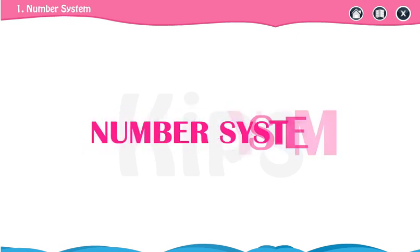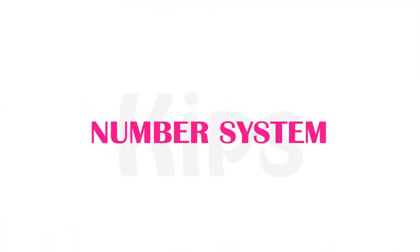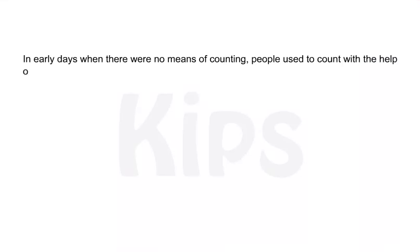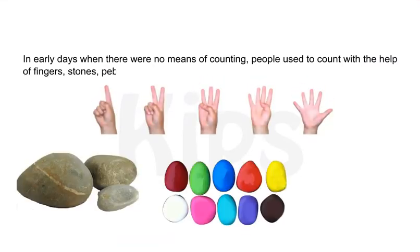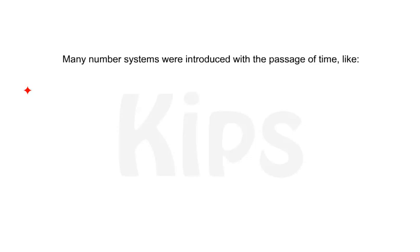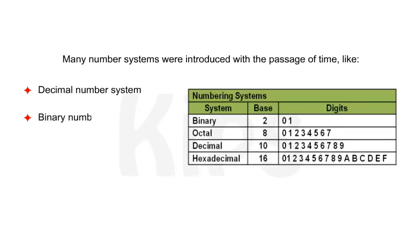Hello students, today we are going to learn about the number system. In early days when there were no means of counting, people used to count with the help of fingers, stones, pebbles, sticks, etc. These methods were not adequate and had many limitations. Many number systems were introduced with the passage of time, like the decimal number system, the binary number system, the octal number system, and the hexadecimal number system.